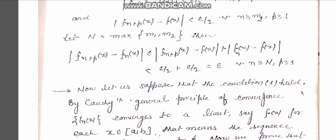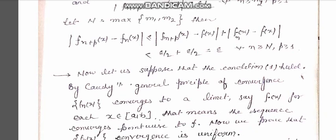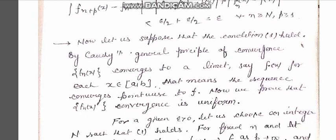Since condition one holds, for all x the modulus of f_{n+p}(x) minus f_n(x) is less than epsilon. So by Cauchy's general principle of convergence, f_n(x) converges to a limit, say f(x), for each x belonging to the closed interval [a, b]. This means the sequence converges pointwise to f.